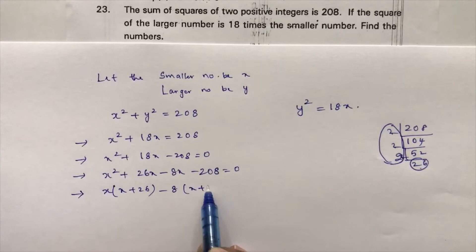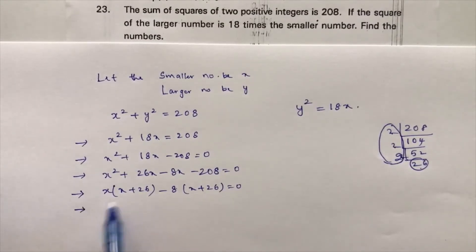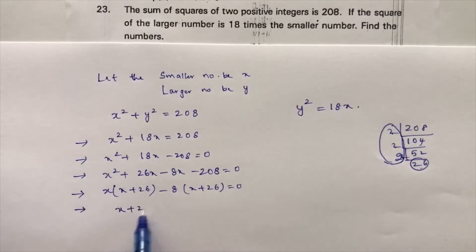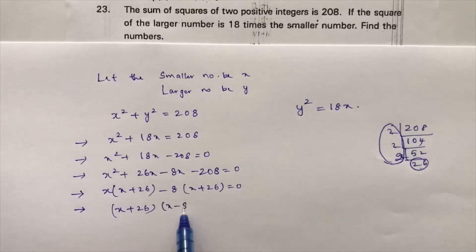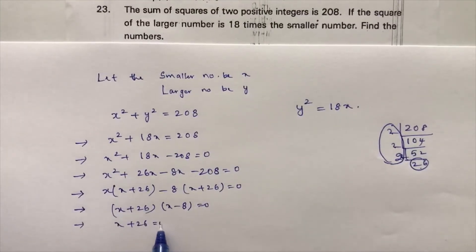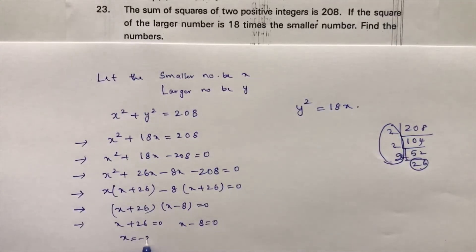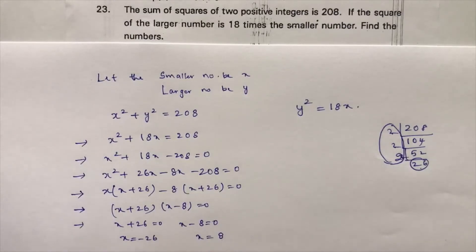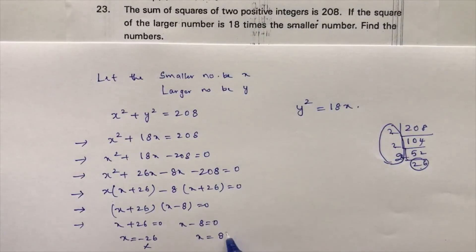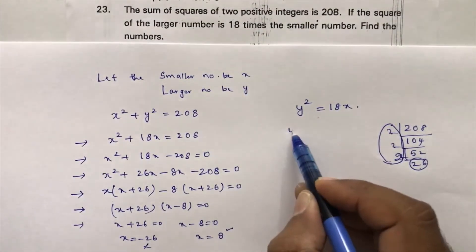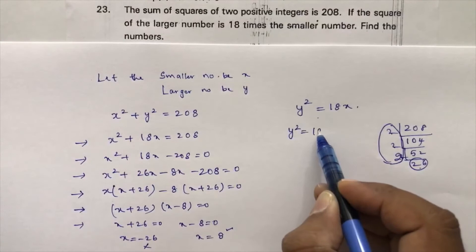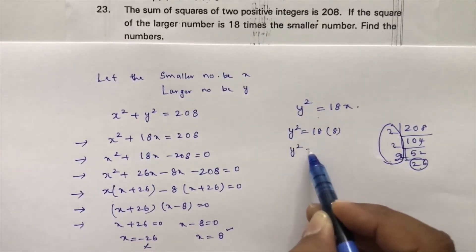Factoring gives x(x plus 26) minus 8(x plus 26) equals 0, so (x minus 8)(x plus 26) equals 0. This gives x equals minus 26 or x equals 8. Since the question states two positive integers, we take x equals 8.